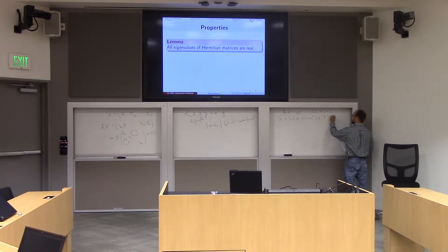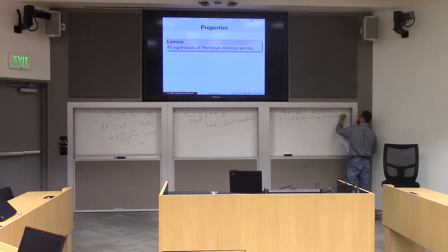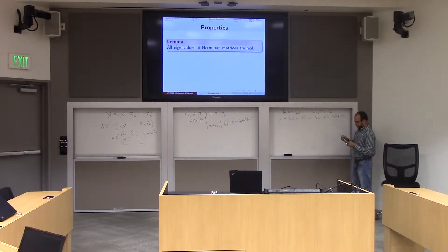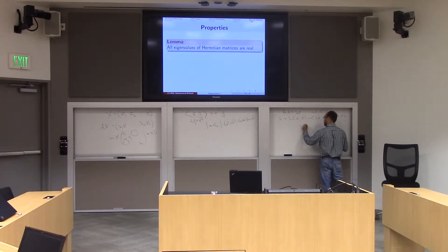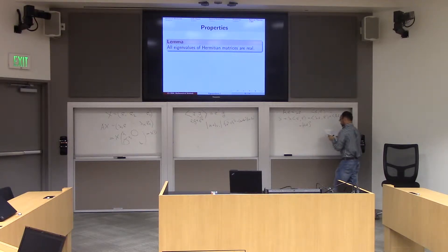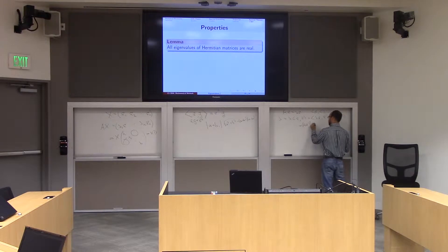So let's substitute ax. Isn't that tricky? So now, what is this thing? Well, this is a x transpose times x conjugate bar.